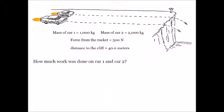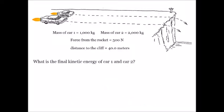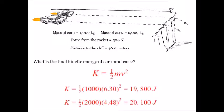How much work was done on car one and car two? Work is equal to force times distance. They both have the same force acting over the same distance, so the same 20,000 joules of work is done on each car. The final kinetic energy — a new equation for this chapter — is one-half MV squared, giving one-half times mass times final velocity squared. Same 20,000 joules again.